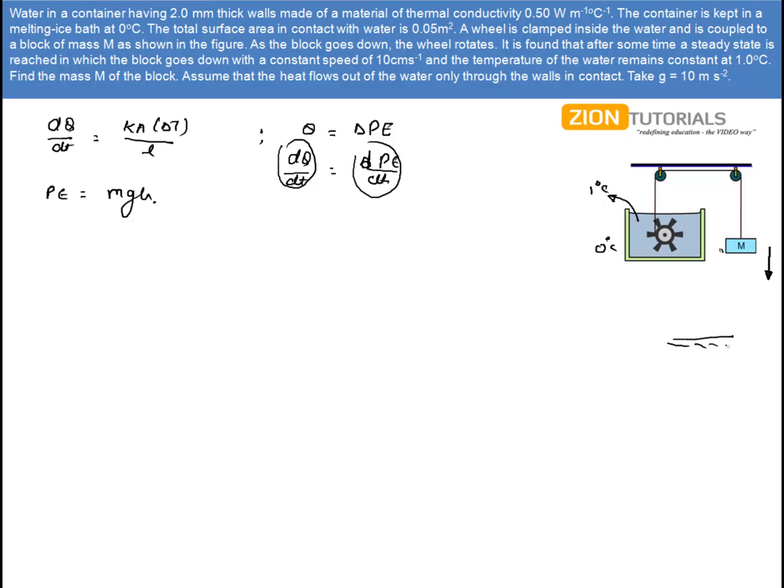Now, let's say this is my ground level and initial height H. Potential energy is this. On differentiating it with respect to T, I have MG dh/dt. Now, this dh/dt is nothing but the velocity because the rate of change of displacement from the ground is equal to the velocity. So, it will be equal to MGV.